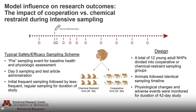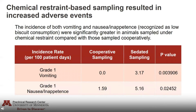Animals were sampled initially multiple times a week, followed by less frequent regular sampling for the duration of the study. Physiological changes and adverse events were monitored for the duration of the study and then compared across cohorts. The first thing we found was that chemical restraint led to an increased incidence of adverse events — the incidence of both vomiting and nausea/inappetence were significantly greater in animals sampled under chemical restraint compared to those sampled cooperatively. An increase in adverse events has major scientific implications and highlights the impact of handling technique on animal welfare. These handling-related adverse events may complicate study outcome interpretation, making it difficult to distinguish intervention-related events from those caused by handling technique, and may even alter therapeutic efficacy.